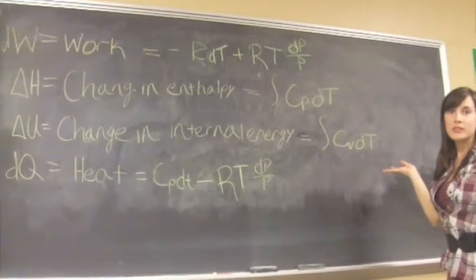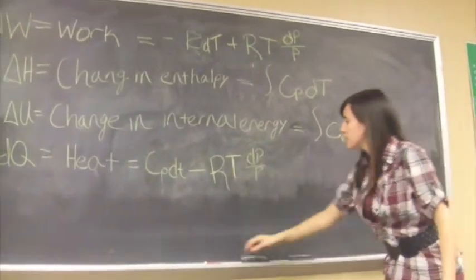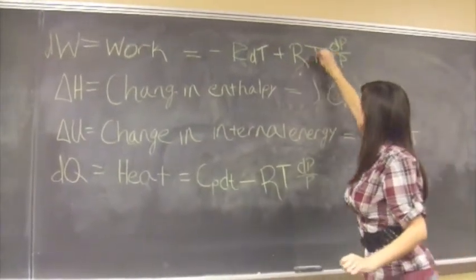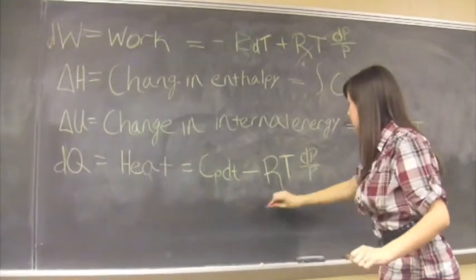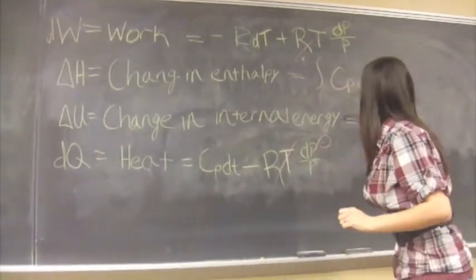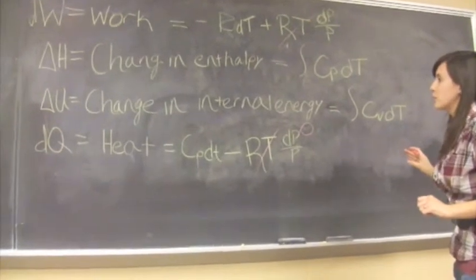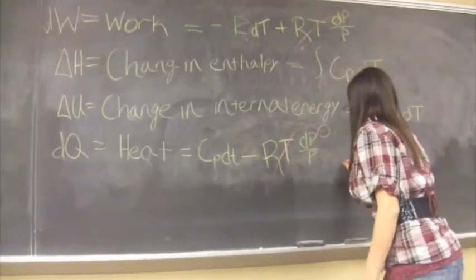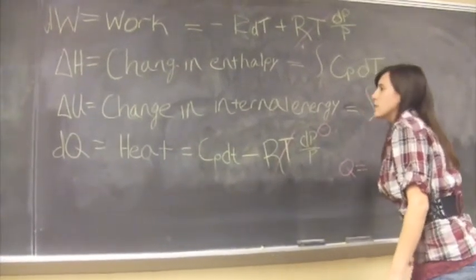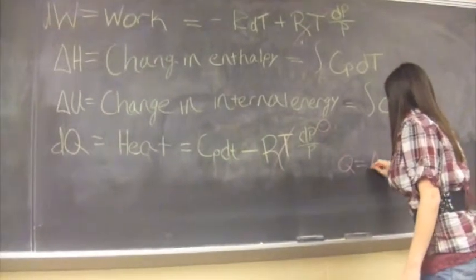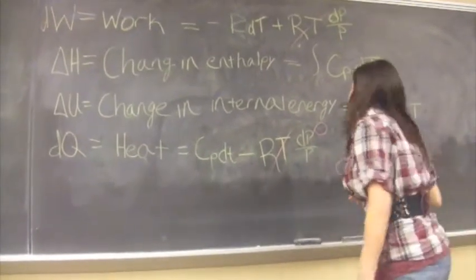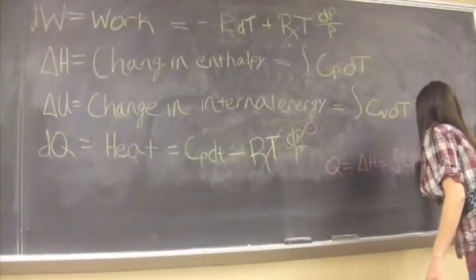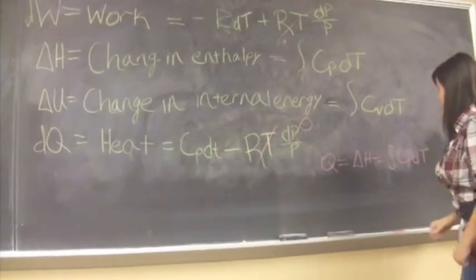An isobaric process is a process in which the pressure stays constant. Whenever you're working with this process, you integrate this equation and this equation. This goes to zero, and this goes to zero, and then you're left with these two completely the same. So you get Q equals delta H.